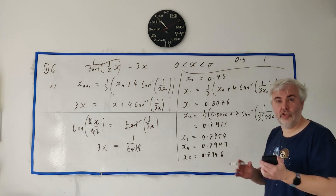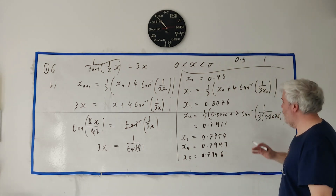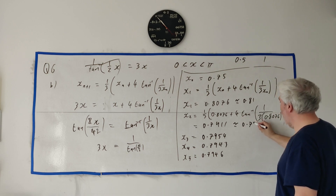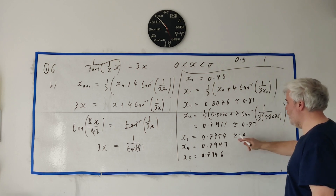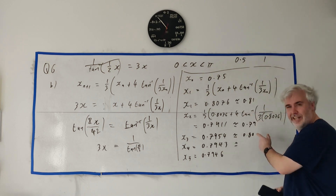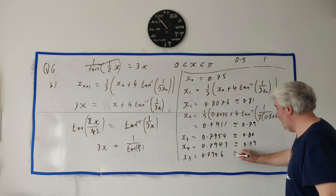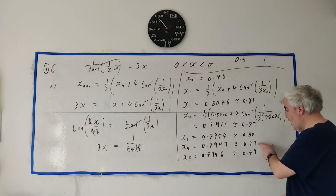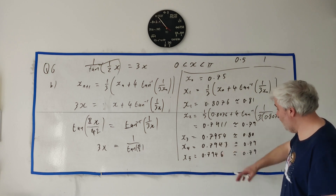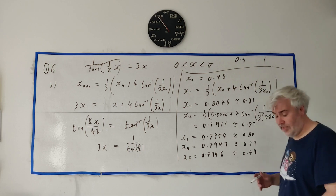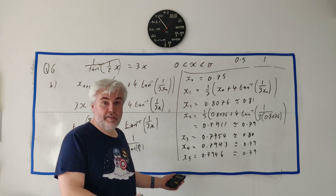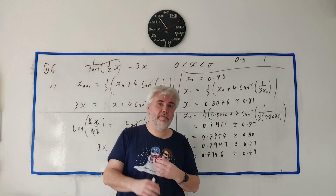For the final answer, they wanted it to two decimal places. Rounding: x₁ ≈ 0.81, x₂ ≈ 0.79, x₃ ≈ 0.80, x₄ and x₅ ≈ 0.79. Once you get the same rounded number twice in a row — 0.79 and 0.79 — you've gone far enough. The answer is alpha ≈ 0.79. This type of question comes up if not every exam then at least 70% of the time, so learn how to do it.